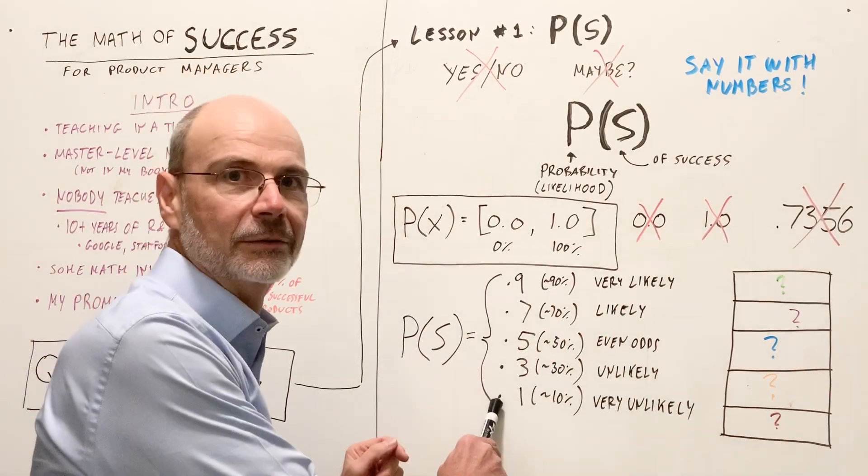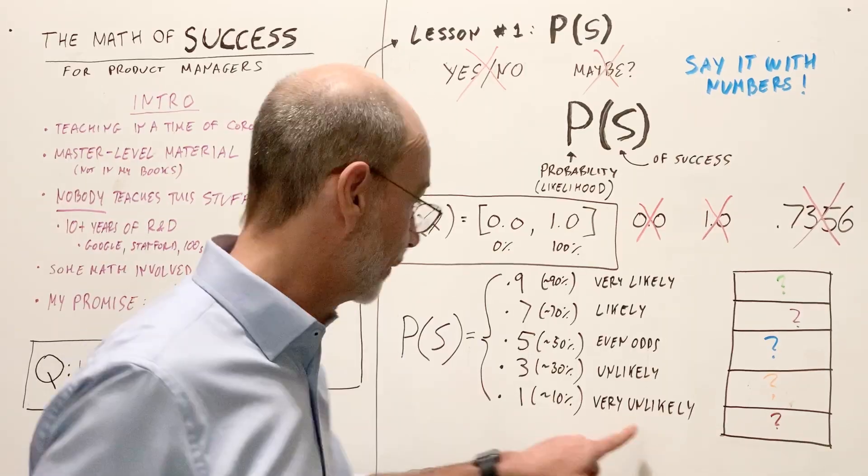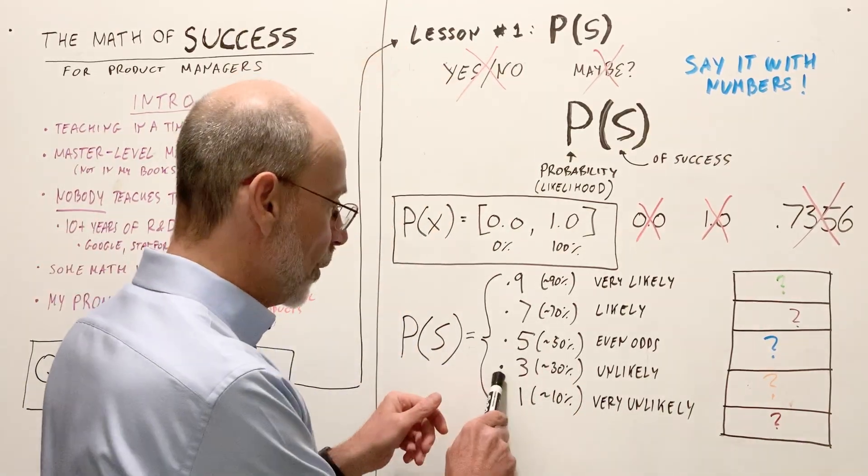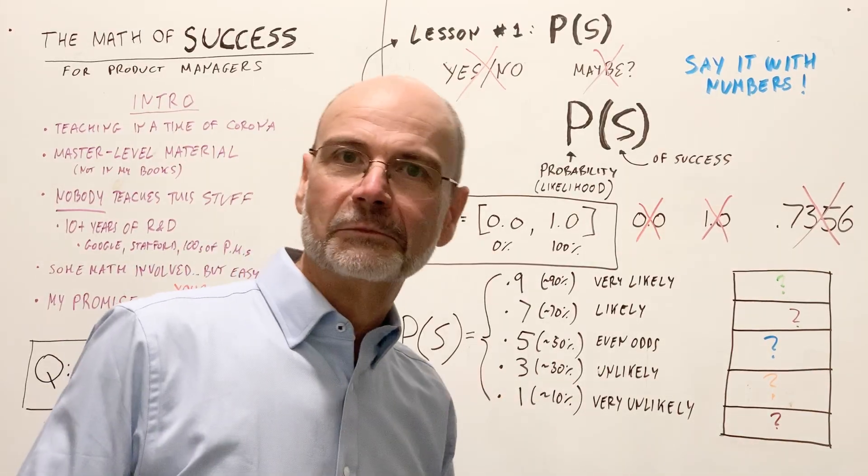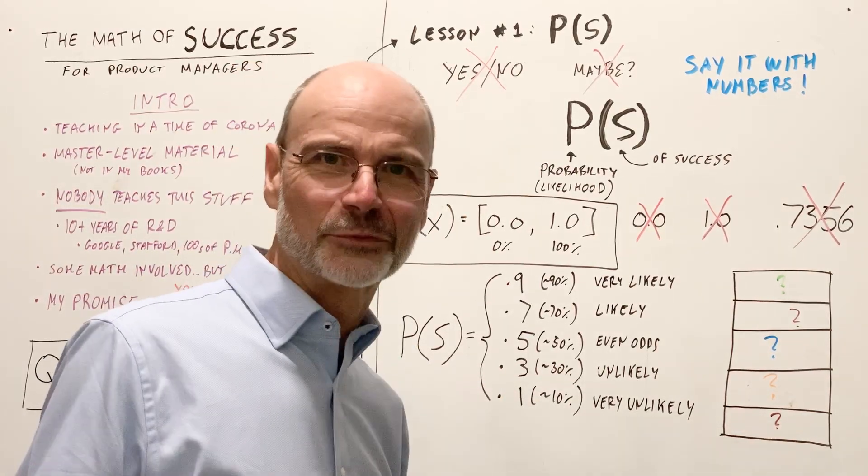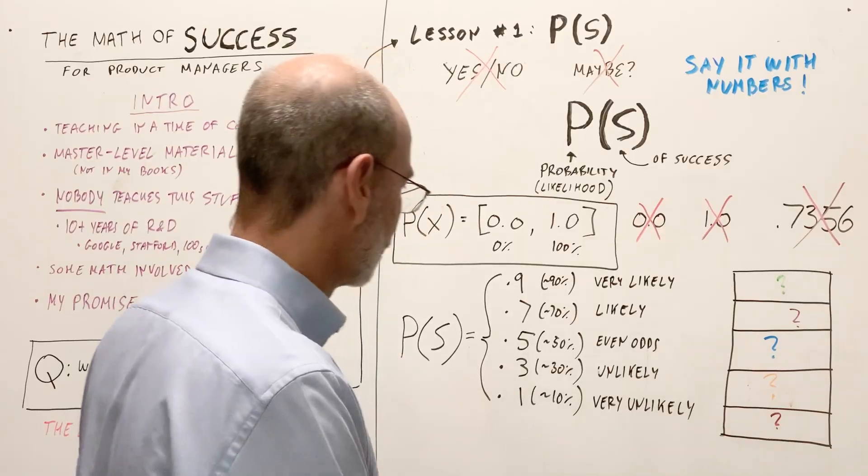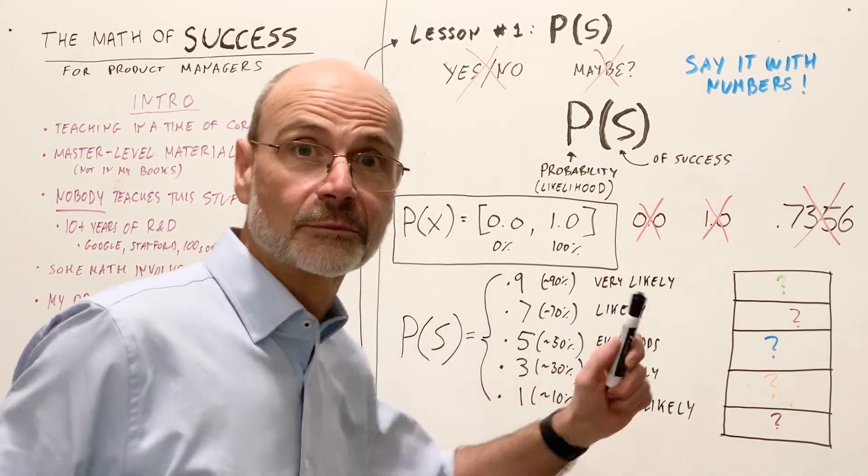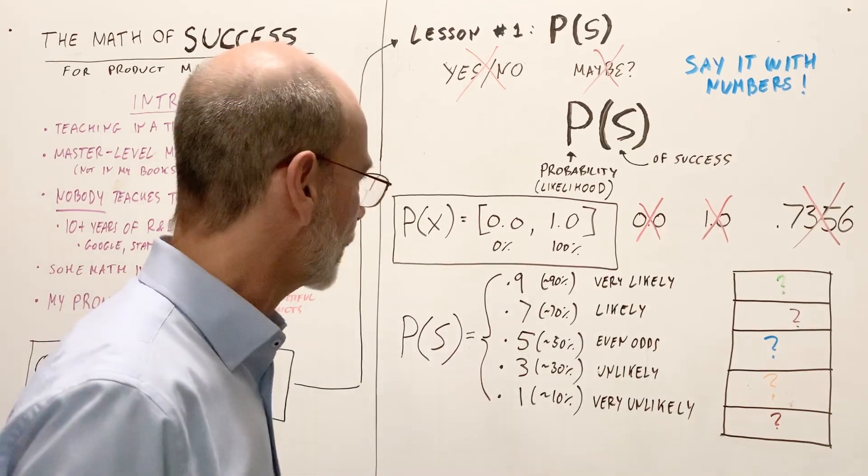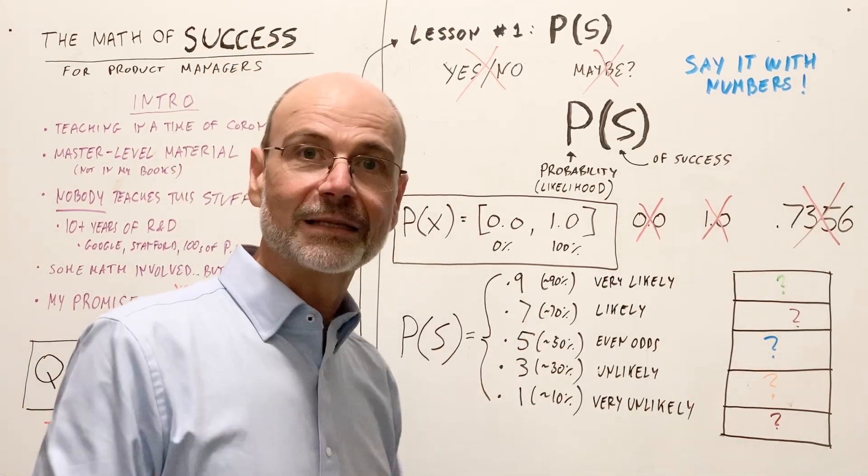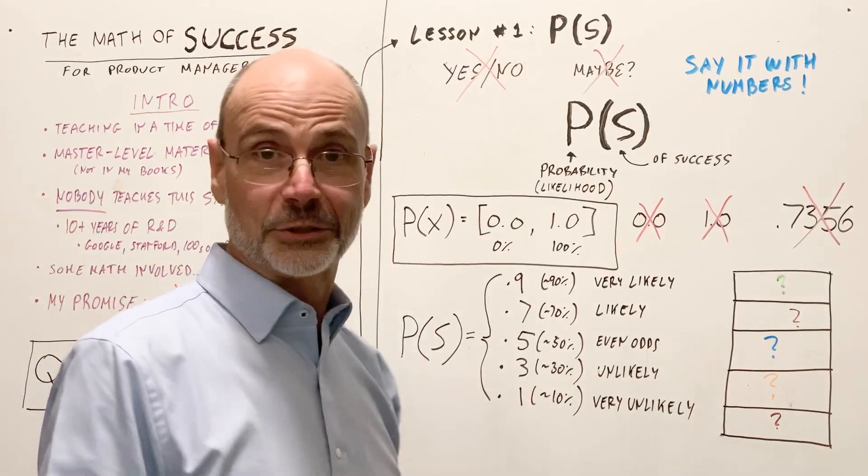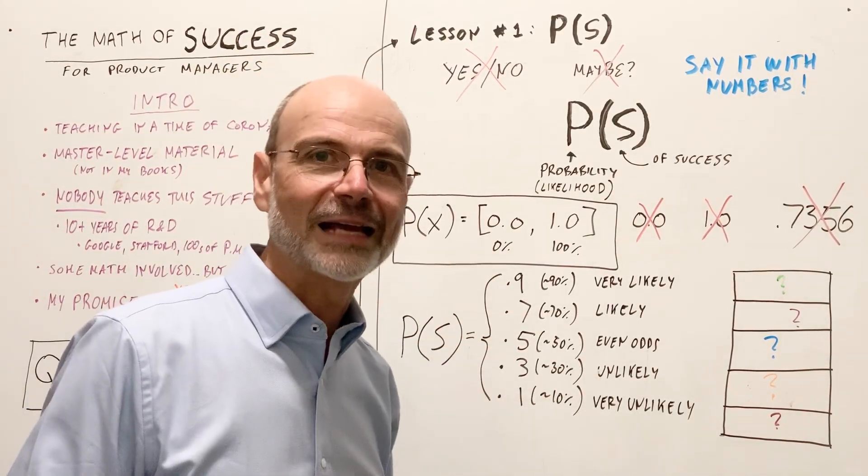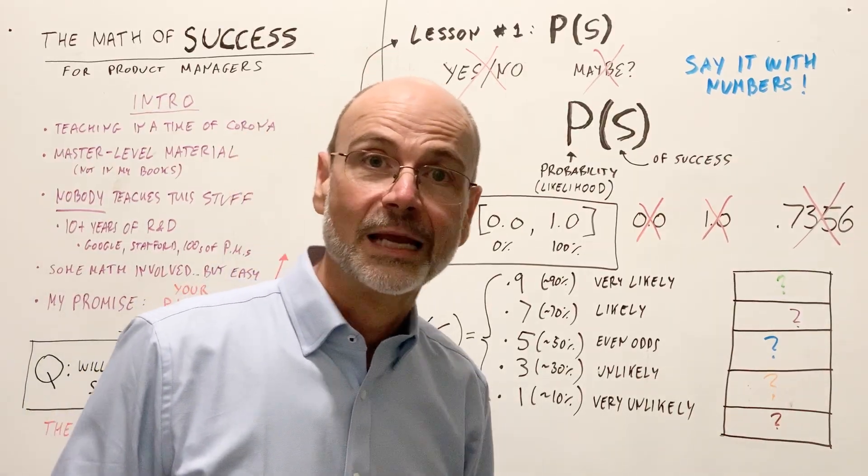0.1 equal to 10%, very unlikely, meaning you have a 10% chance of success, approximately. Remember, approximately. 0.3 or 30%, we call that unlikely. A 30% chance of success is unlikely. 0.5 or 50%, we call this even odds, 50-50 chance. 0.7 or 70% is likely. You're likely that the product will succeed. And 0.9 or 90% is very likely that the product will succeed.